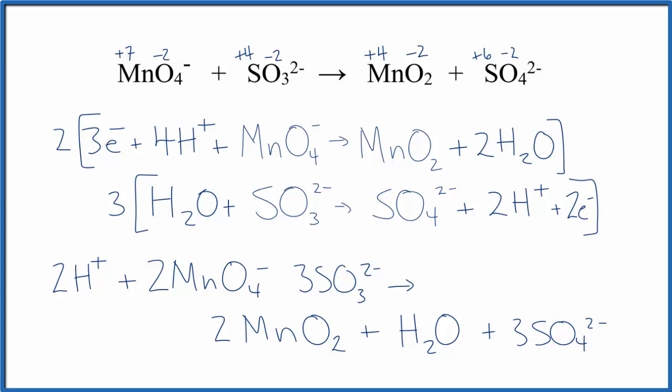This is Dr. B with the balanced redox reaction for the permanganate ion and the sulfite ion, giving us manganese dioxide and the sulfate ion. Thanks for watching.